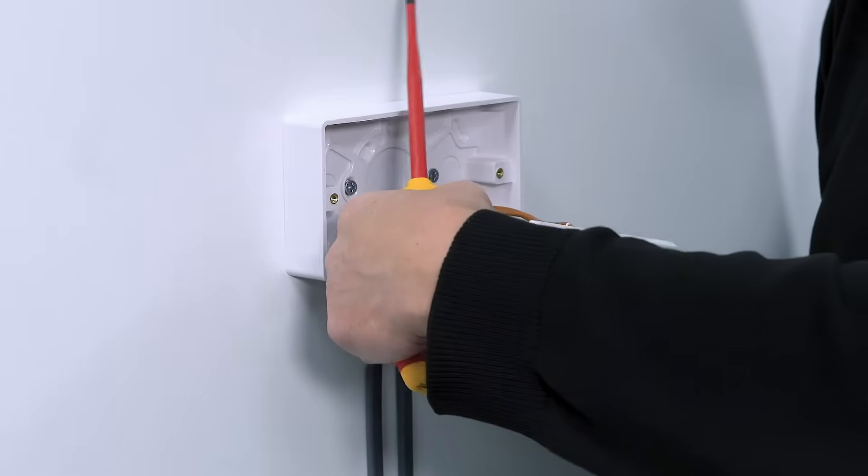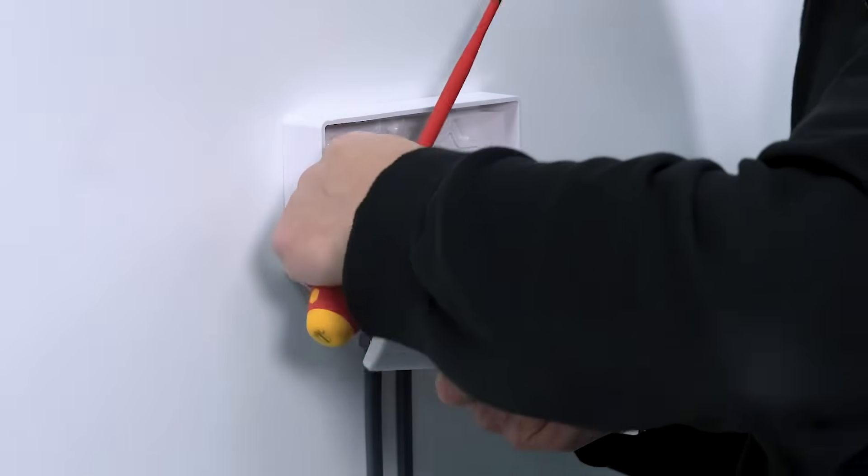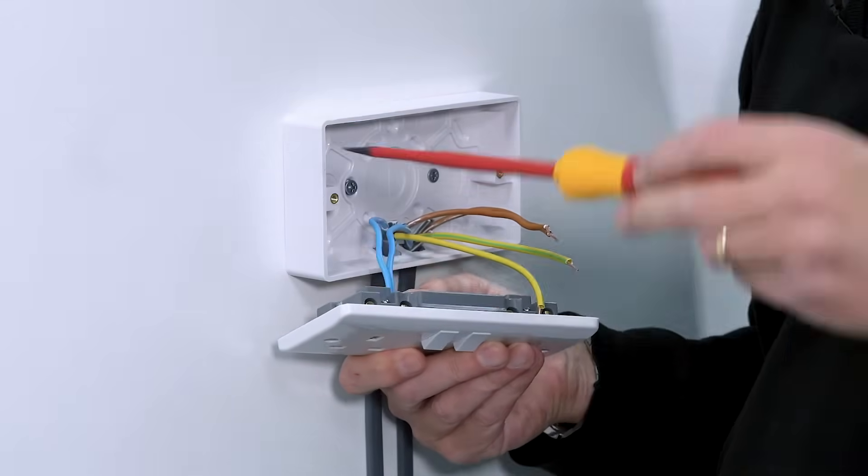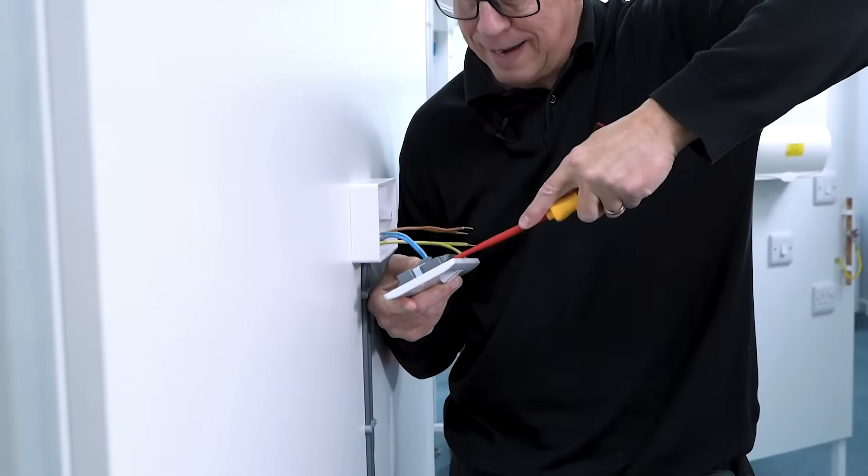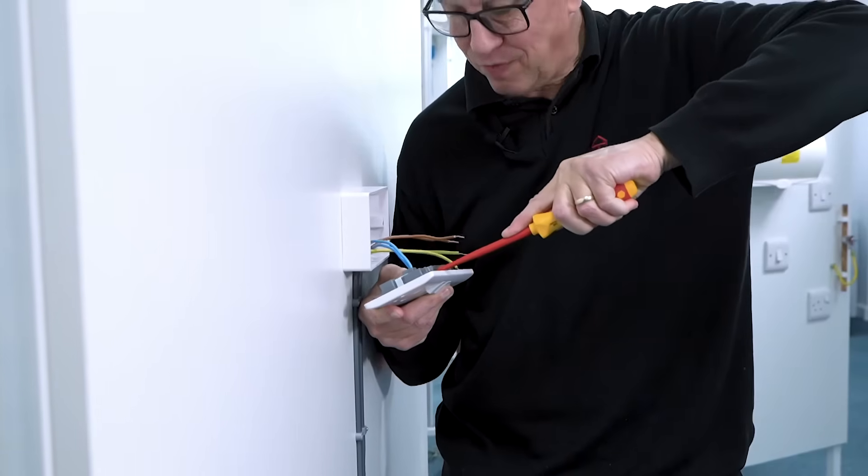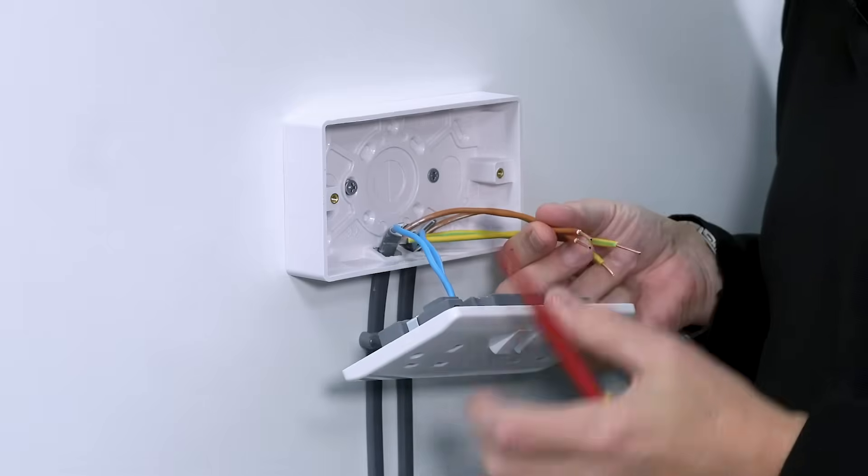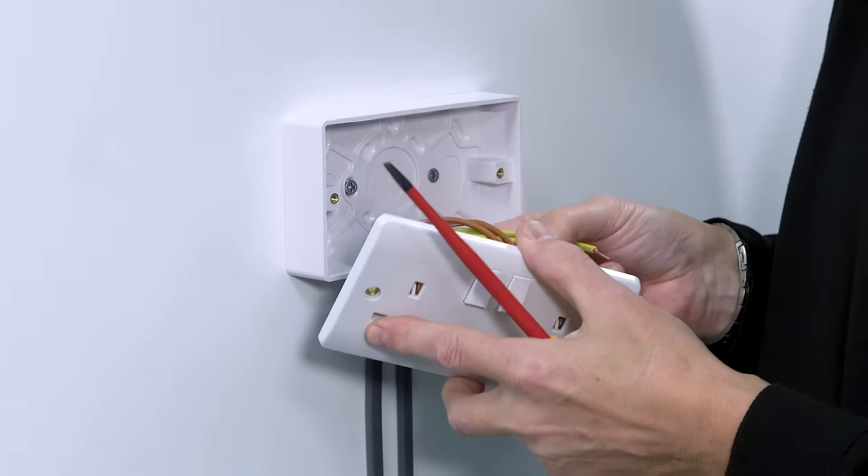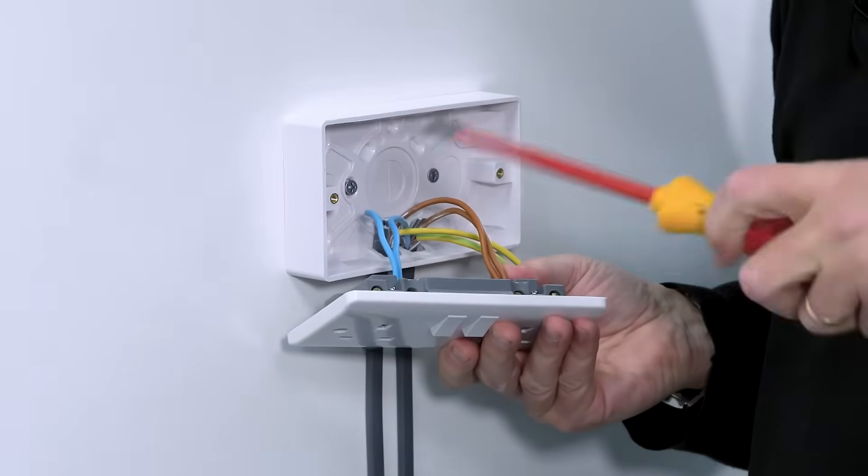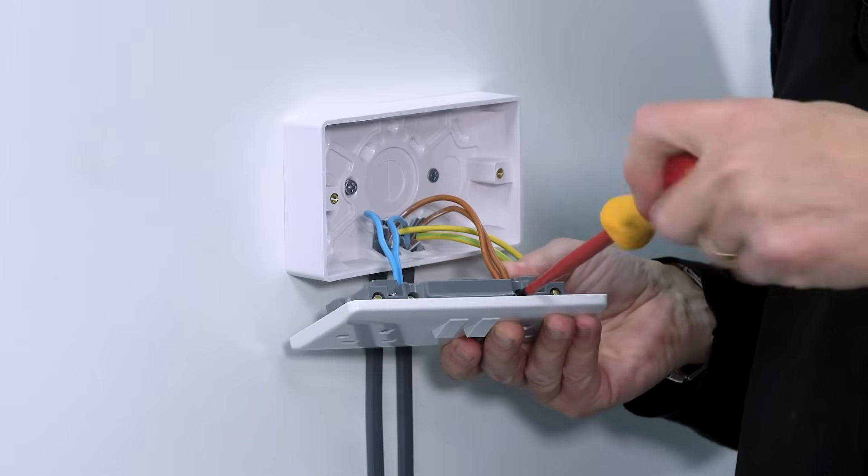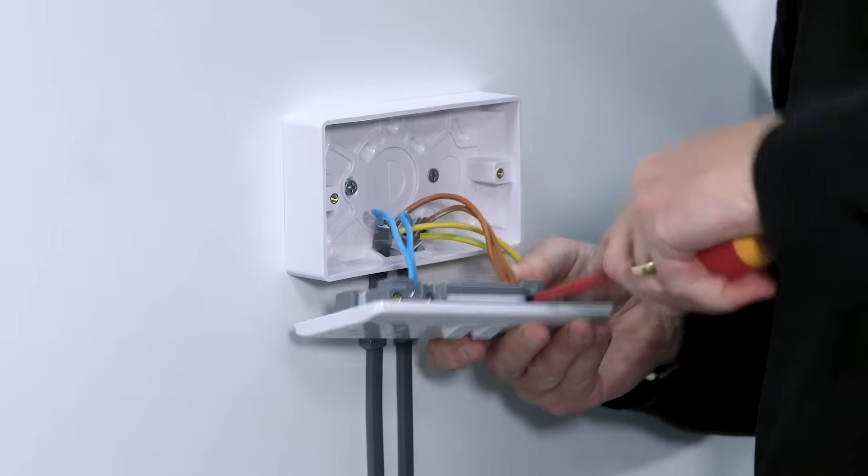Here we go, let's terminate these. I'm putting the neutrals into the terminal marked with the letter N. I'm pushing them in; I can feel them there making good contact. I can see there's just enough copper there. I'm fastening onto the copper and not the insulation. Now I give that a nice tight turn. For those of you that are perhaps just starting out, it may be good to get yourself a torque screwdriver because that will let you know when you've tightened it up enough. I'm now putting the line conductors into the line terminal, keeping that nice and tight. Remember, the screwdriver needs to fit the screw head, otherwise, if the screwdriver is too small, it can damage the head of the screw.